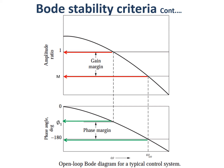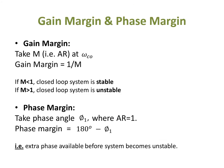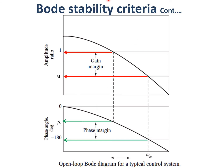The gain margin uses the amplitude ratio m. We take m at the crossover frequency, and the distance from one is called the gain margin. If m is less than one, the closed-loop system is stable. If m is greater than one, the closed-loop system is unstable. So if it's less than one it is stable and the stability measure is called the gain margin; if it's more than one, it is unstable.